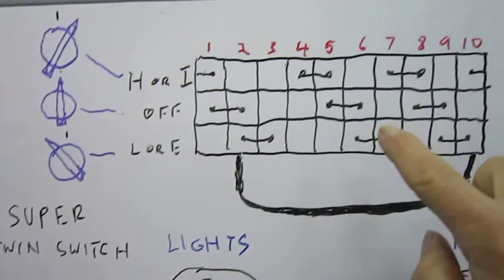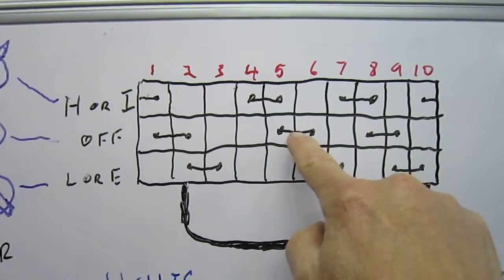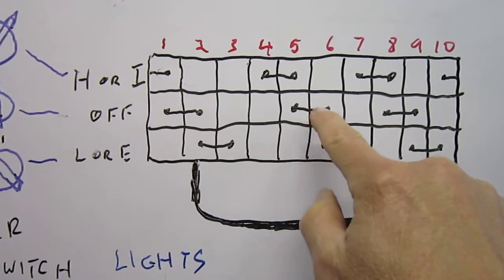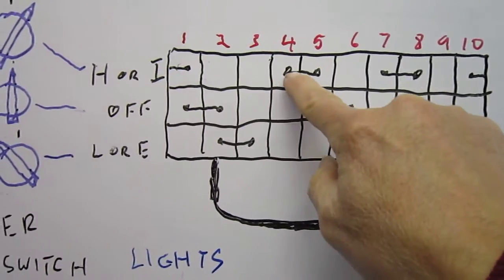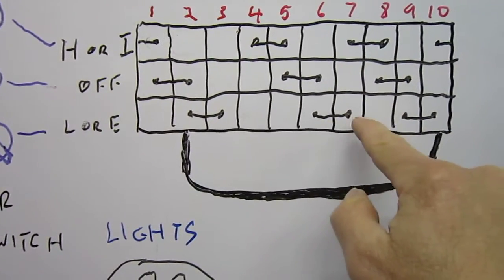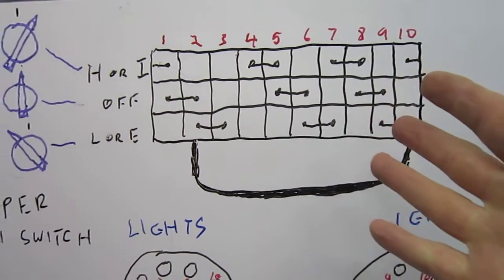And of course when you look at this, it's obvious. So there it is in the center position, say we'll take these set of pins. There it is in the center position, you turn it one way, of course it goes to four and five. You turn it that way, it goes to six and seven. It's obvious when you look at it in a schematic like this.